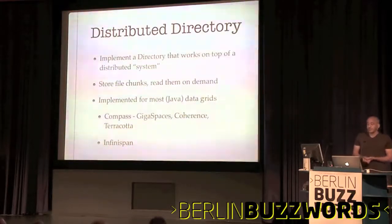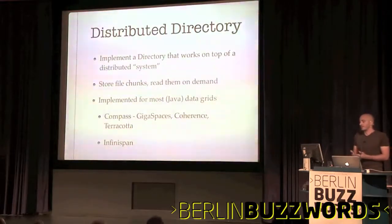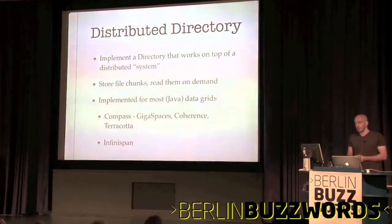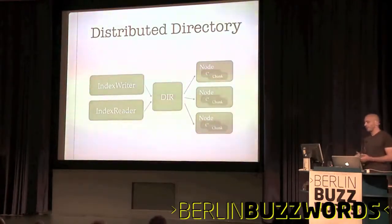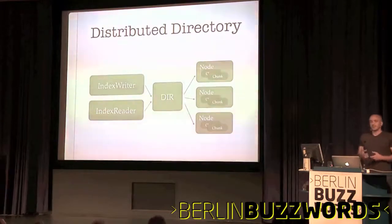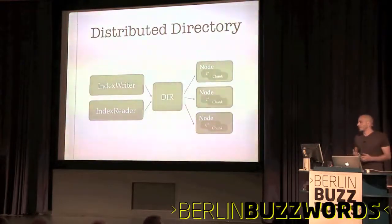The implementation is quite simple — you take files, large files are broken down into chunks, and they are stored in whatever distributed storage you want to use. I was storing in an in-memory data grid for best performance. It's implemented for most Java-based data grids. In Compass there are implementations for GigaSpaces, Coherence, and Terracotta, and Infinispan also has one. You have the index writer working on top of a directory, which is a facade on top of several nodes storing pieces of files.